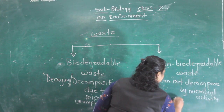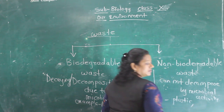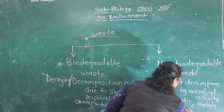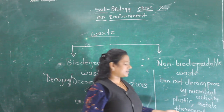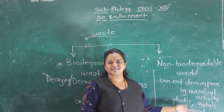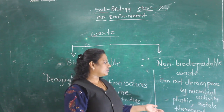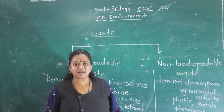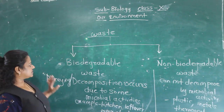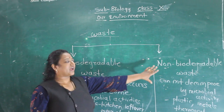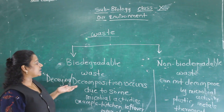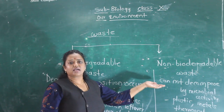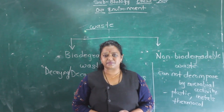Examples of non-biodegradable waste are plastic, metals, and thermocol. Nowadays government has banned the use of plastics and decorative materials made of thermocol in festivals, because this material cannot be decomposed by microbial activities. So here we have seen there are two types of waste — biodegradable waste, which can decompose due to microbial activity, and non-biodegradable waste, which cannot be decomposed by microbial activity. Thank you.